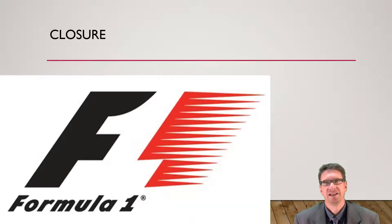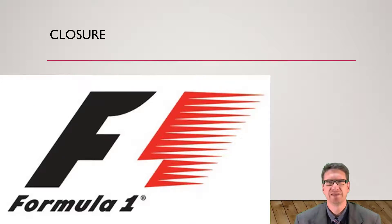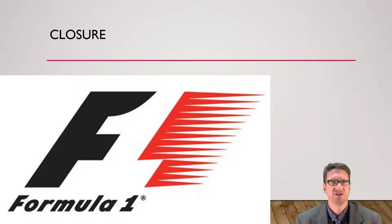There's also closure. Looking at an old Formula One logo, this is the idea that your brain will fill in the missing parts of a design or image to create a whole. In its simplest form, it allows you to follow something like a dotted line to its end. Large chunks of the outline can be missing and you can fill in the gap very easily. The brain has no problem filling in the missing sections to see the number there.